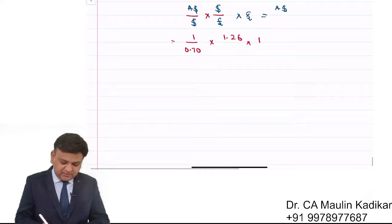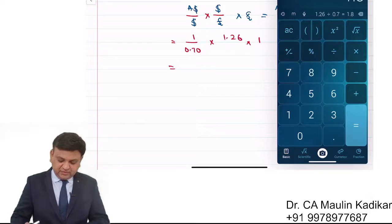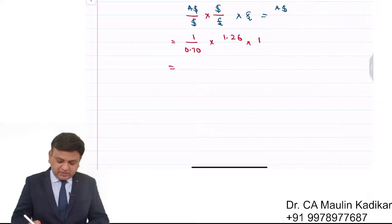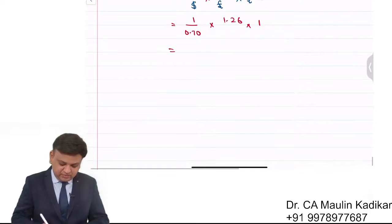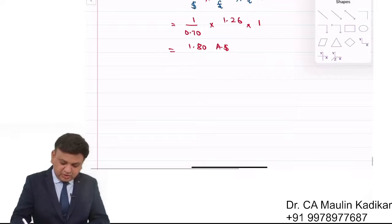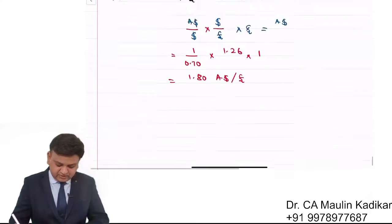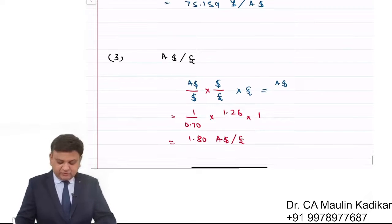The answer is 1.80 Australian dollar per UK pound. That is the way we compute the answer. I request all of you to write down the answer.